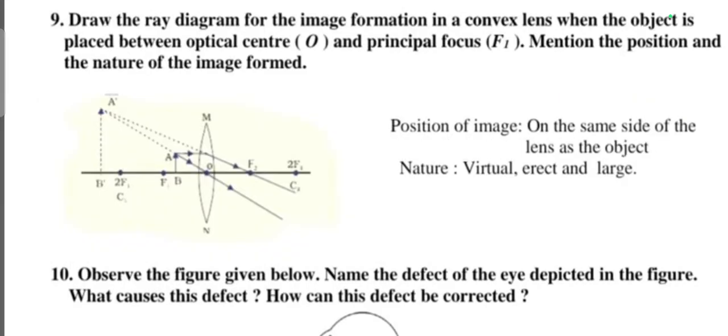Question number nine: draw a ray diagram for the image formation in convex lens when an object is placed between optic center and principal focus. Mention the position and the nature of the image formed. So this is the object, this is the ray, image. The position of the image on the same side of the lens on the object, nature is virtual and erect and large.